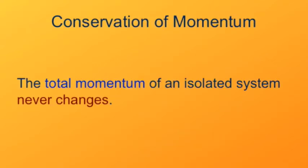So this will be our best statement of the law of conservation of momentum: the total momentum of an isolated system never changes. By isolated, I mean that there are no interactions with objects outside the system. A consequence of this law is that the total momentum of the universe never changes. If the universe is defined as that which contains everything, then of course there are no interactions with outside objects, and the universe itself is an isolated system. Therefore, whatever momentum the universe has, it never changes.